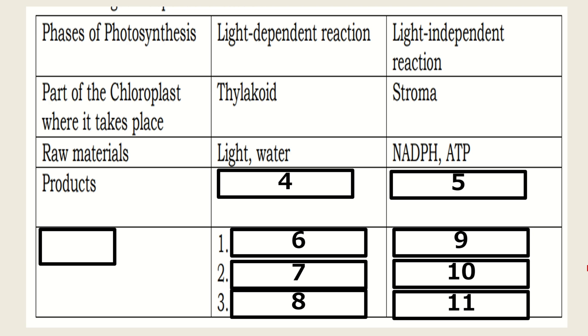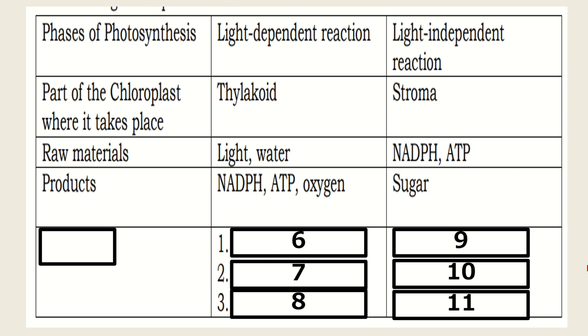The products of light-dependent reaction, NADPH, ATP, and the by-product oxygen. However, in the Calvin cycle, the product is sugar.